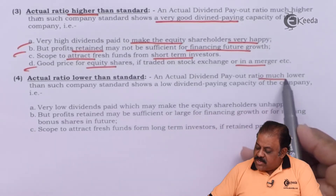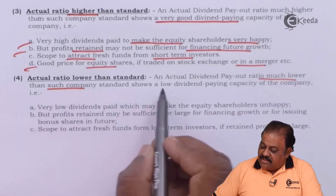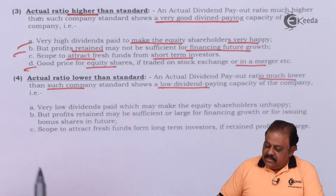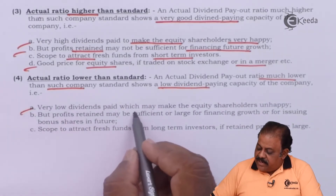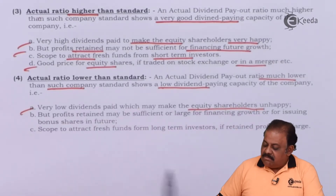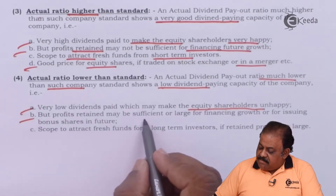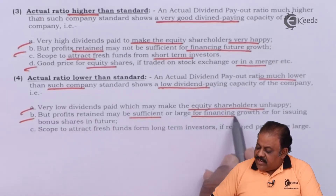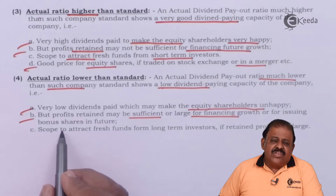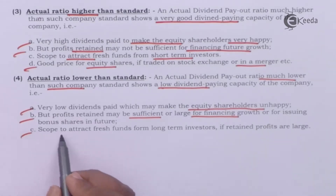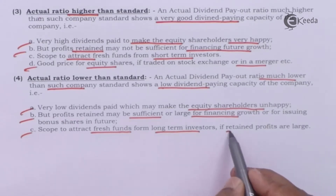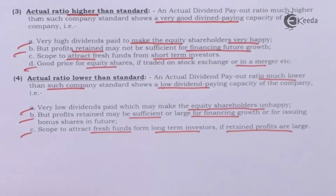An actual dividend payout ratio much lower than the company's standard shows a low dividend paying capacity — very low dividends paid, which makes equity shareholders a bit unhappy. However, profits retained may be sufficient or large for financing future growth, such as for issuing bonus shares. There is scope to attract fresh funds from long-term investors if retained profits are large.